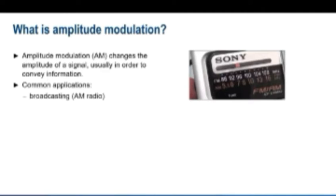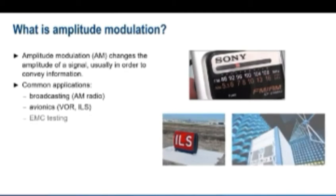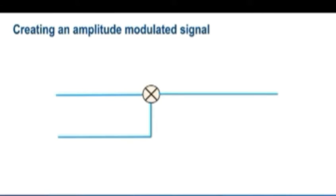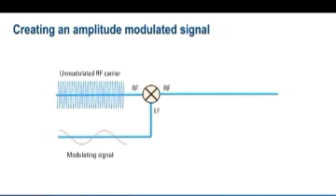How do we create an AM signal? Most often, AM signals are created using a mixer. The inputs to which are an unmodulated RF carrier and a low frequency modulating signal.